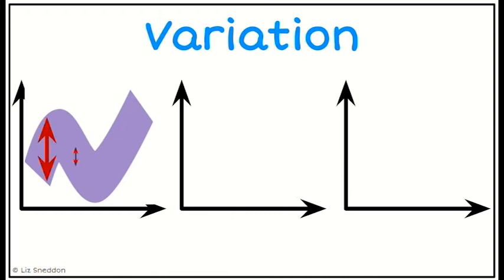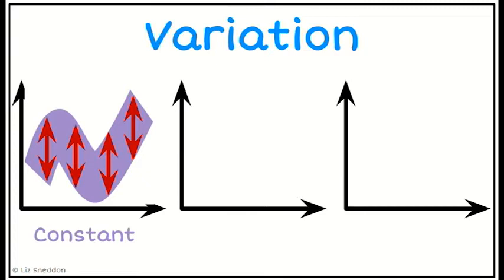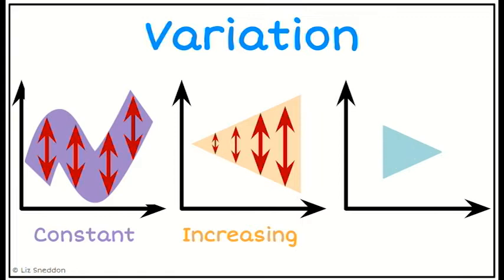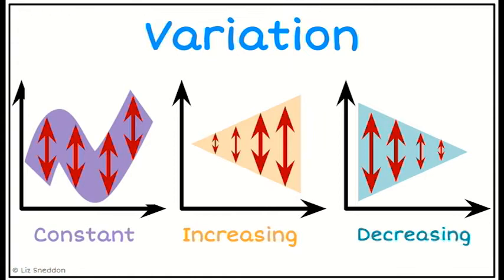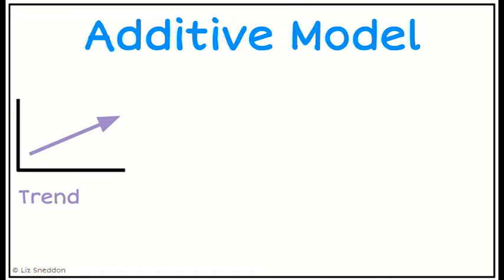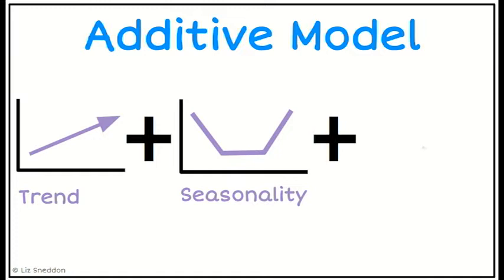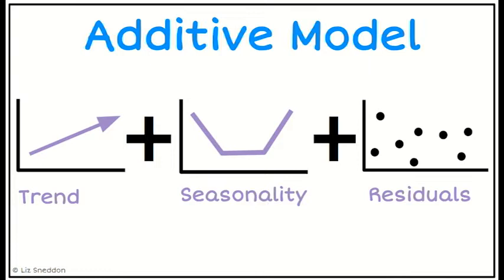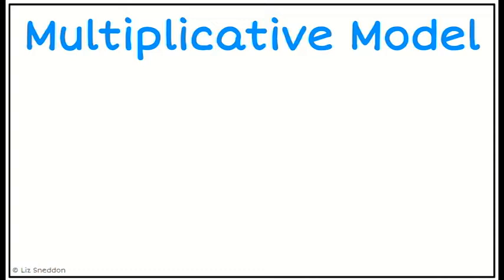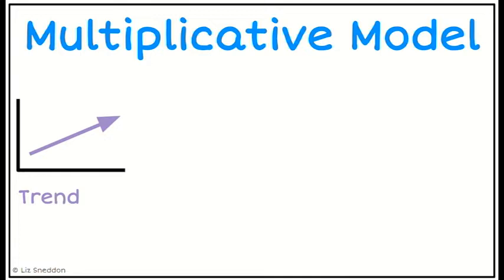The fourth thing we want to think about is variation. If our variation is constant across the model, then our additive model is going to be a good one to use. However, if we have an increasing or fan effect where variation is increasing over time, or a funnel effect where variation is decreasing over time, then the additive model is not going to be a good one to use. The additive model means we take our trend, add on the seasonality component, and add on some residual — our random variation. That's the default if we've got constant variation.